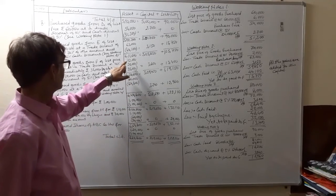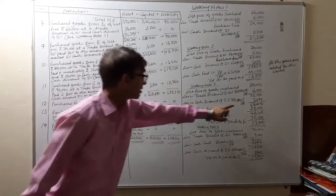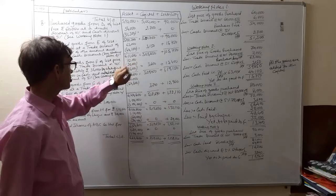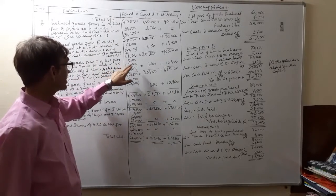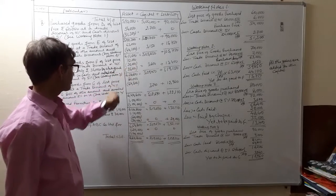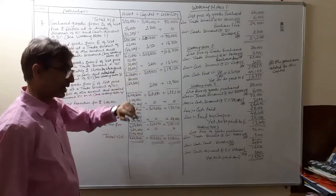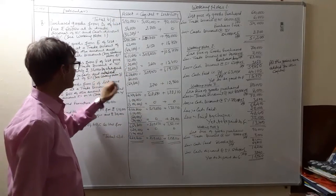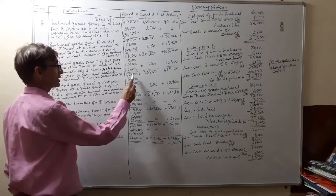The purchase price of the goods is 72,000; we have purchased goods worth 72,000 which will be added to our stock. We paid 20,000 in cash, so 20,000 will be subtracted. We paid a check of 35,000, so our bank balance will reduce by 35,000. Bank balance is also an asset, so it will be subtracted. The total comes to 62,800.